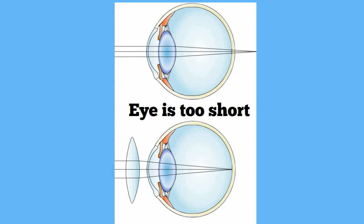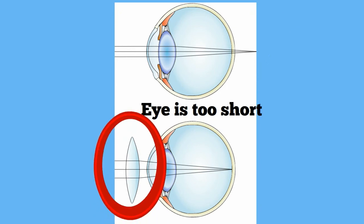If light could pass through the retina, the image would come into sharp focus at a point behind the retina. Convex lenses are used to correct farsightedness.